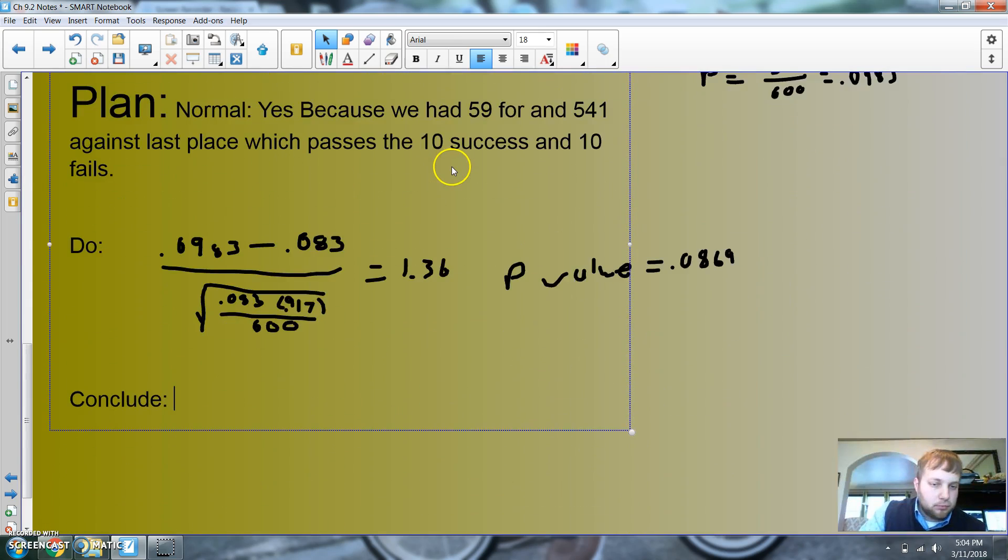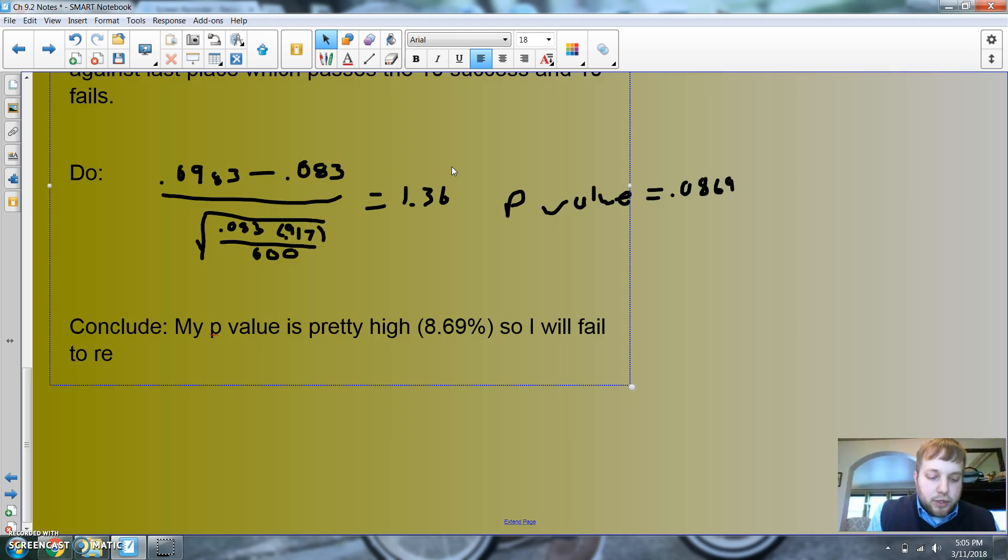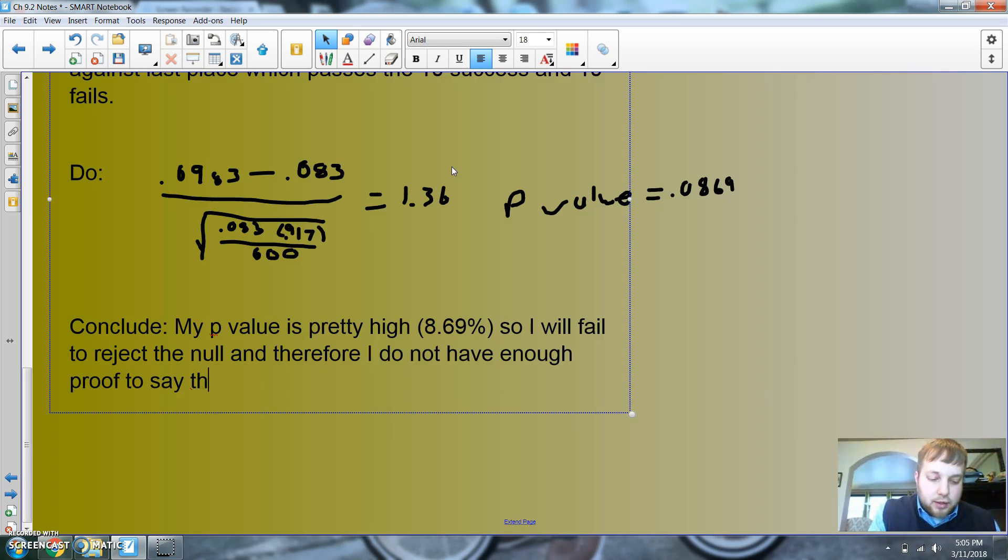In conclusion, I would say my p-value is pretty high. 8.69% possible, that's a possible odds I could have gotten that if it was still true. So I will fail to reject the null. And therefore, I do not have enough proof to say that last place gets the most votes, or people who sing last get the most votes.